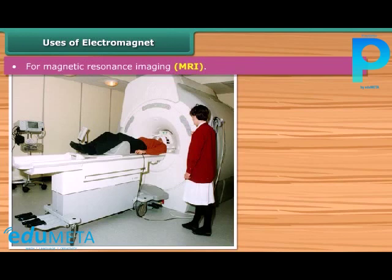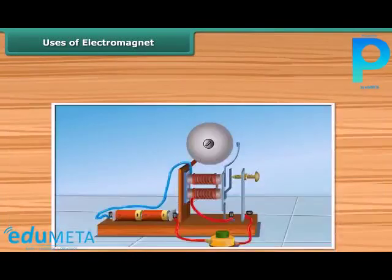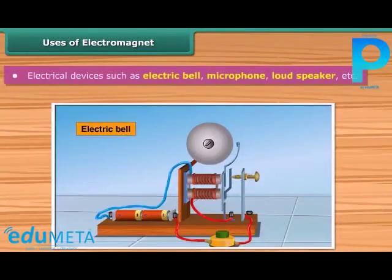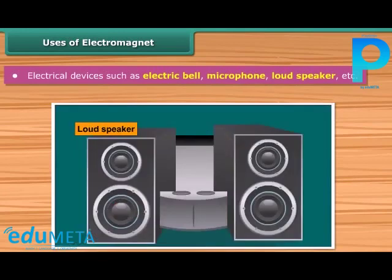Electromagnets are also used for magnetic resonance imaging, getting a detailed image of the inside of the body to diagnose a number of diseases. A variety of electrical devices, such as electric bell, microphone, loudspeaker, etc., make use of electromagnets.